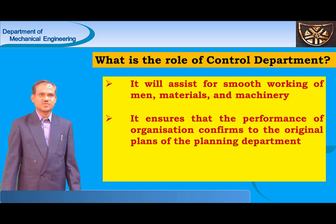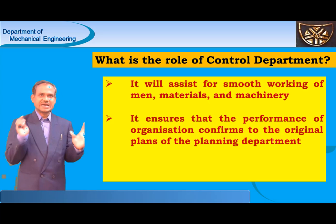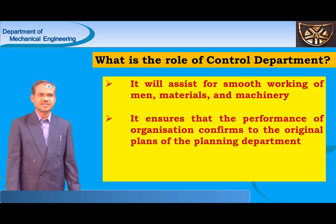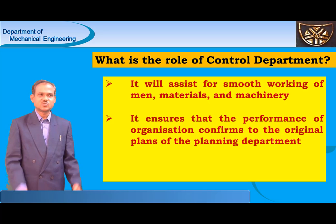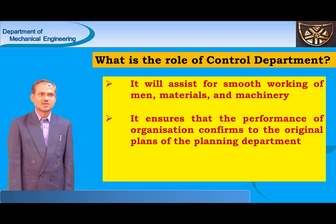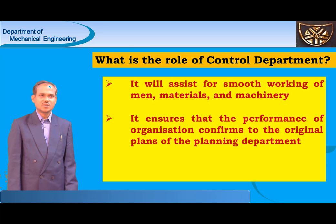The role of the Control Department is to assist for smooth working of resources. Resources may be in the form of Men, Materials, and Machinery and so on. Finally, it produces products of right quality at the right price by using the best and least expensive methods, and ensures that the performance of the organization conforms to the original plans of the Planning Department. This is the role of the Control Department.